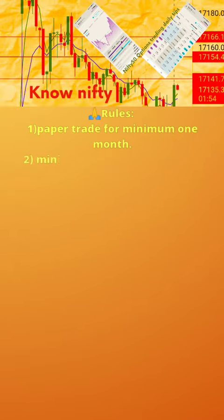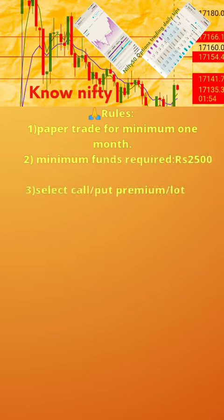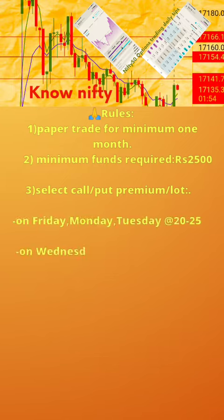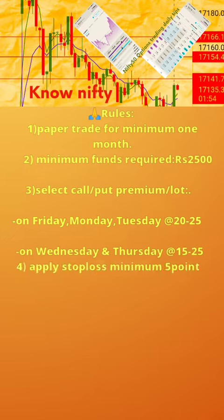1. Paper trade for a minimum of 1 month. 2. Minimum funds required: 2500 rupees. 3. Select call or put premium per lot: on Friday, Monday, Tuesday at the rate of 20–25; on Wednesday and Thursday at the rate of 15–25.